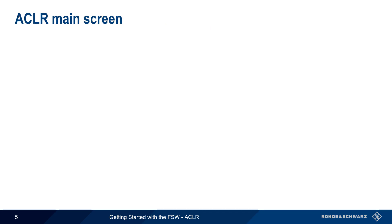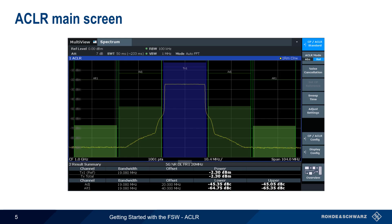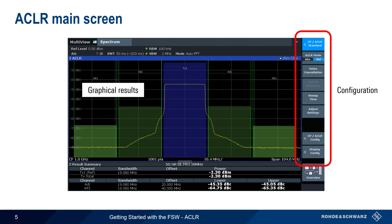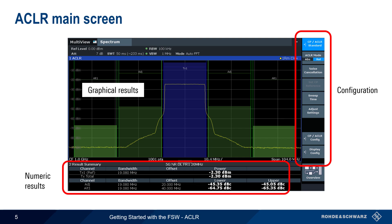Here we see the main ACLR user screen. Configuration settings are accessed via the buttons on the right. The default view shows both the graphical results as well as numerical results beneath them. In the remainder of this presentation, we'll explain how to configure and interpret these settings and displays. Let's start with channel configuration.